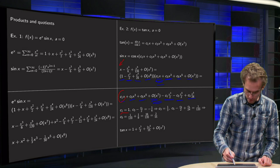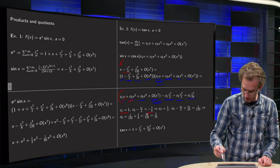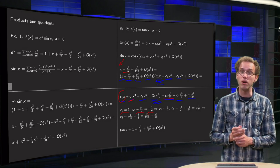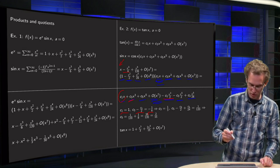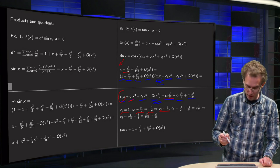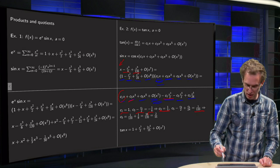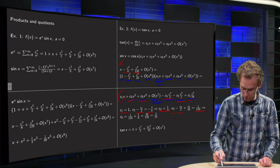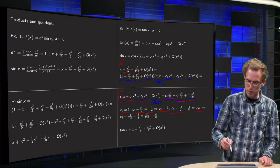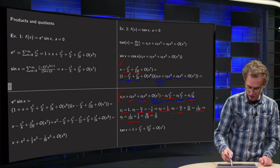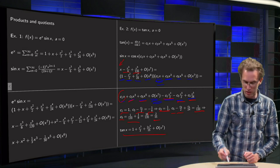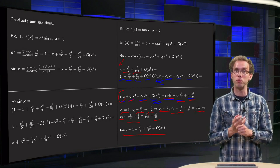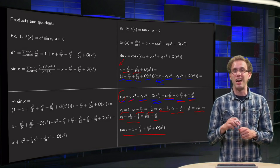Comparing x cubed terms: we have minus 1 over 6 here, and c3 minus 1 half c1 here. So c3 minus 1 half c1 equals minus 1 over 6; since c1 equals 1, we get c3 equals 1 over 3. Then comparing x to the power 5 terms: 1 over 120 on the sine side, and c5 minus c3 over 2 plus c1 over 24 on the other. We know c1 and c3, so we can compute c5: it equals 1 over 24 plus 1 over 8, giving 2 over 15. So the tangent of x equals x plus 1 over 3 x cubed plus 2 over 15 x to the power 5, up to order x to the power 7. You see if you would continue like this, it would get messier and messier.